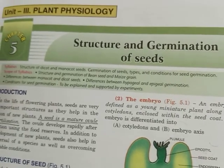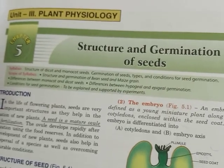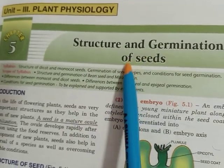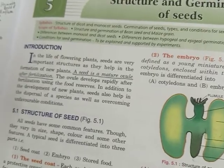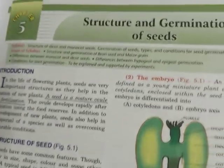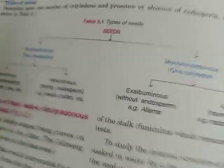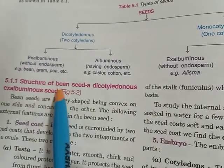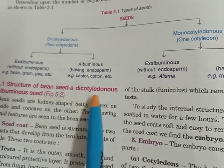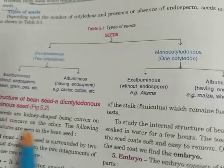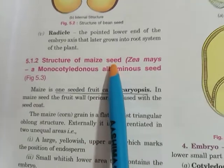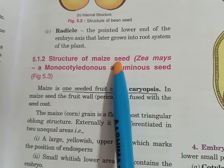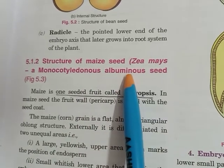Hello everyone, children. This is the third part of the structure and germination of seeds. In the first video I explained the structure of a generalized seed, and in the second part I explained the structure of a bean seed, which is a dicotyledonous and exalbuminous seed. In this third part, I am going to explain the structure of a maize seed. Maize seed is a monocotyledonous seed and it is an albuminous seed.